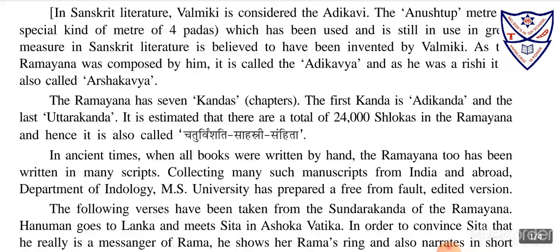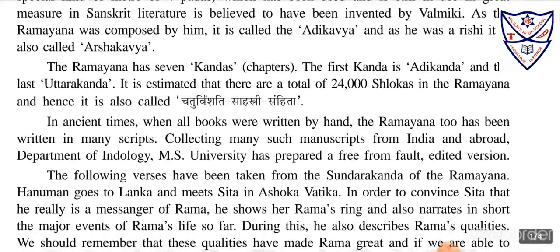A Kand is like a chapter — a whole chapter covering a particular age or particular time period. Valmiki is considered the Adi Kavi. He used the Anushtup meter, a special kind of meter of four padas, which has been used and is still in use in great measure in Sanskrit literature. It is believed to have been invented by Valmiki, who was a very great poet in ancient times.